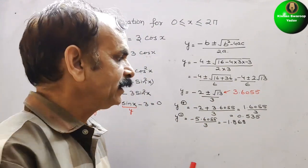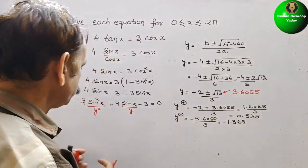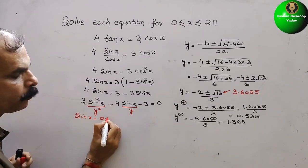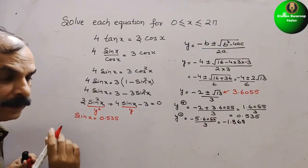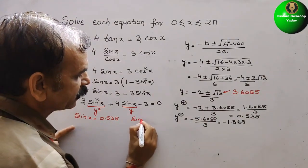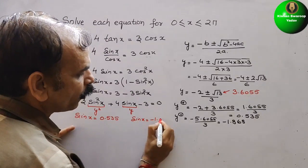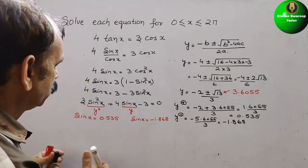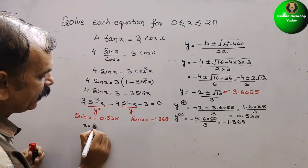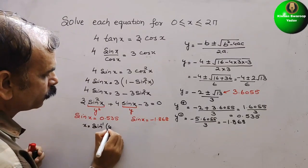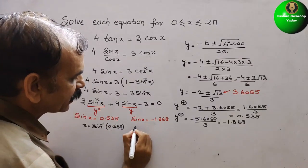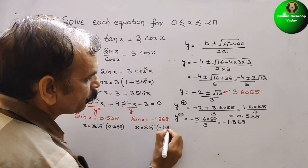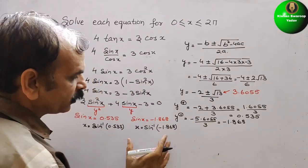So now we can say sin(x) = 0.535 is the first value, and sin(x) = −1.868 is the second value. So x = sin⁻¹(0.535) and x = sin⁻¹(−1.868). There are two values to check.